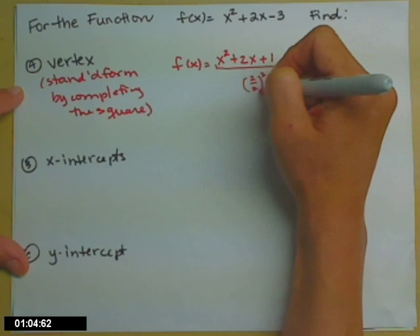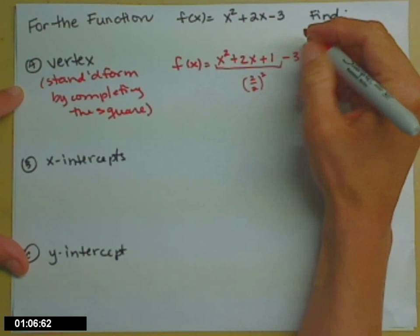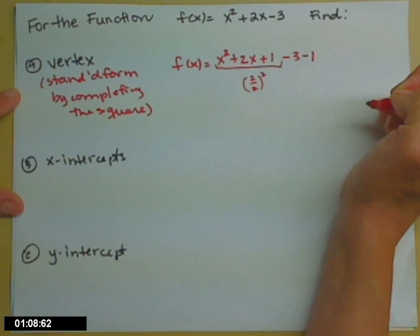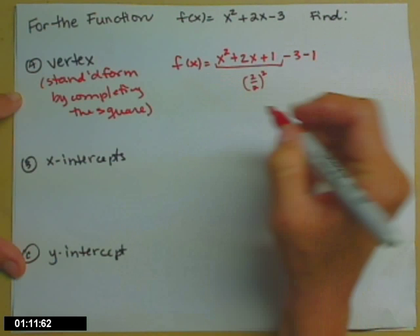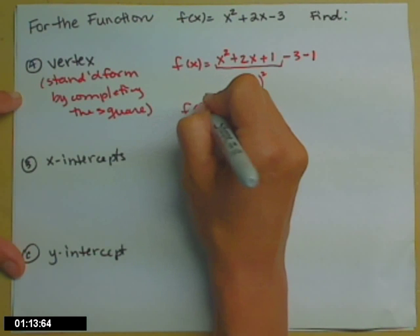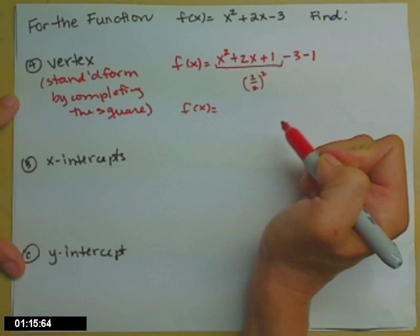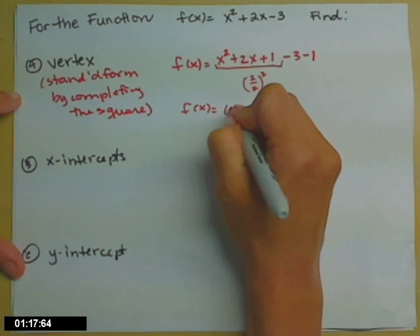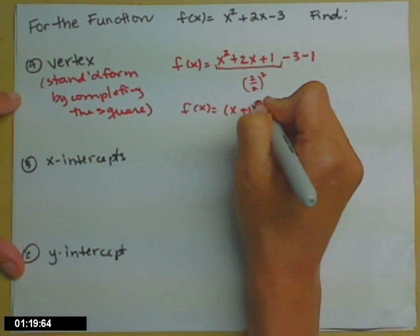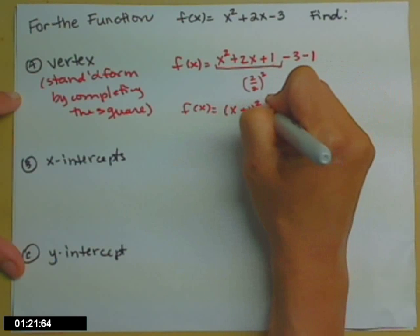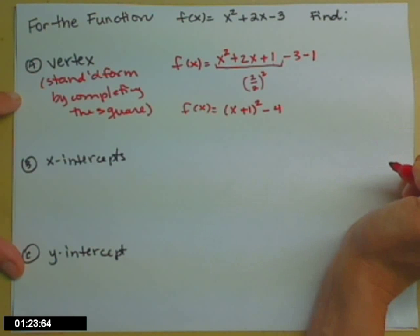add it inside the box. So plus 1, 2 over 2 is 1, 1 squared is 1. Add it inside. Subtract it outside to stay balanced. Factor that perfect square trinomial you just created with the 1. x plus 1 squared, subtract the two pieces outside. Negative 3 minus 1 is negative 4.